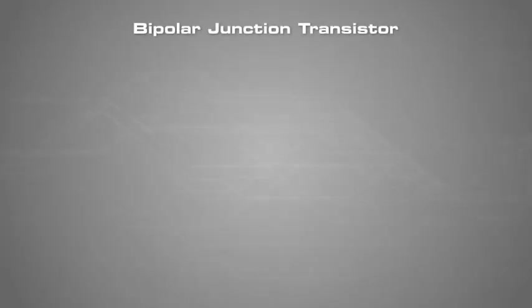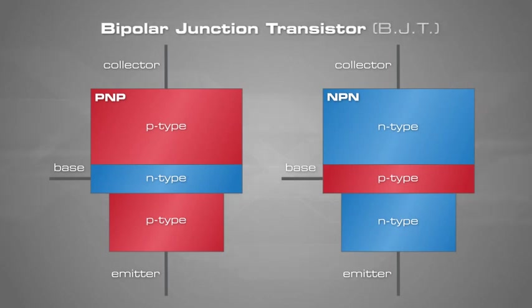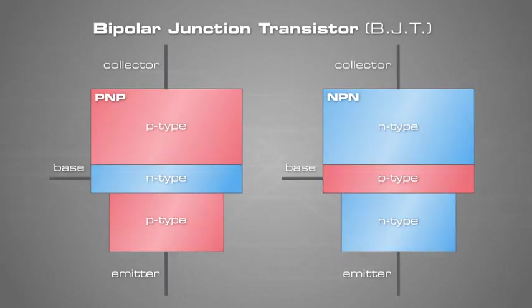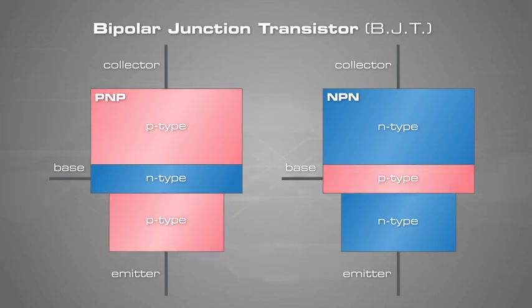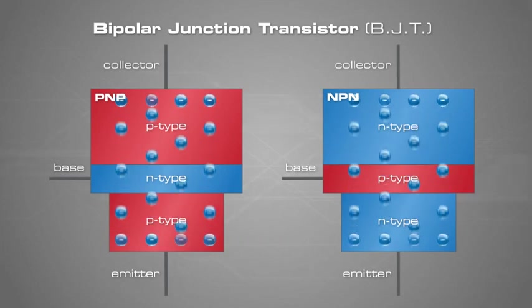Bipolar junction transistors consist of either a PNP or NPN semiconductor sandwich structure. The bipolar junction transistor is commonly referred to as a BJT. A BJT is so named because the controlled current must go through two types of semiconductor material, P and N. The current consists of both electron and hole flow in different parts of the BJT.